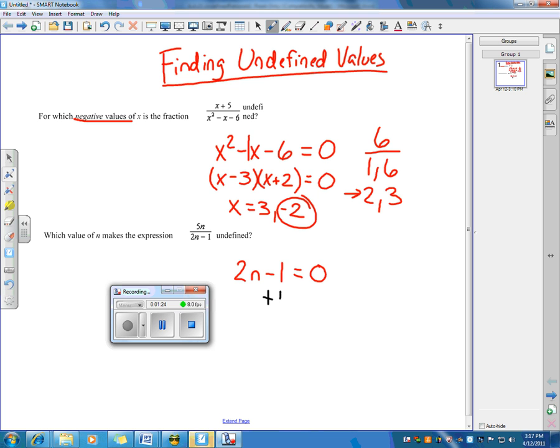I'm going to start by adding 1 on both sides to eliminate the negative 1. Then we have 2n equals 1. Then we're going to finish off by dividing by 2. In this case, n is going to be 1 half. So this value, this fraction, is going to be undefined when n here equals 1 half.